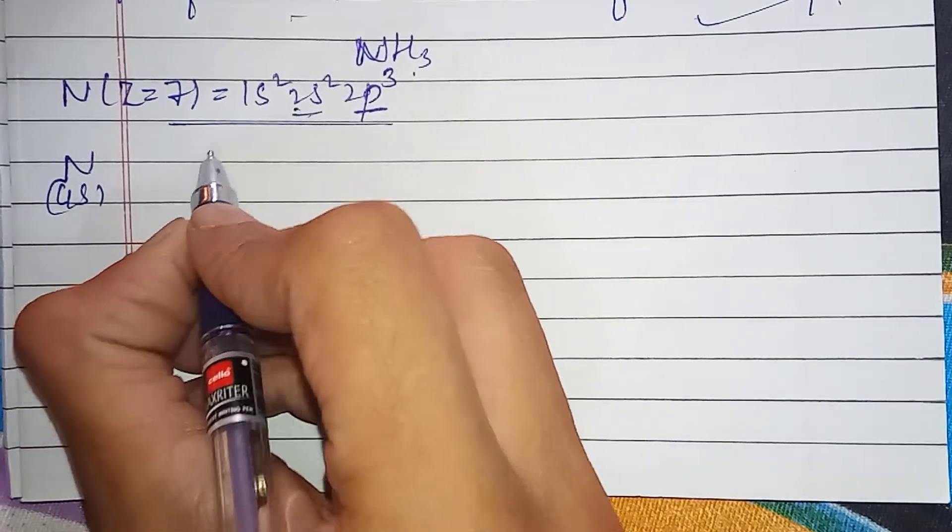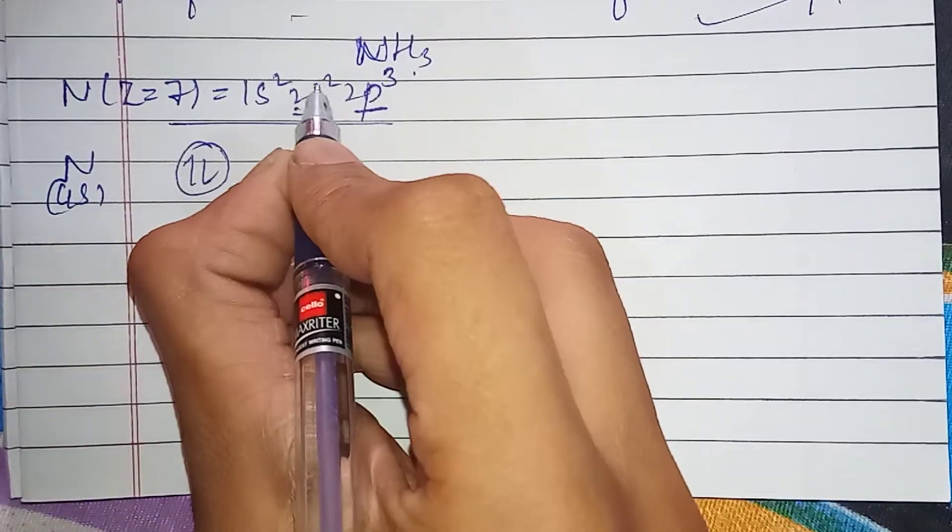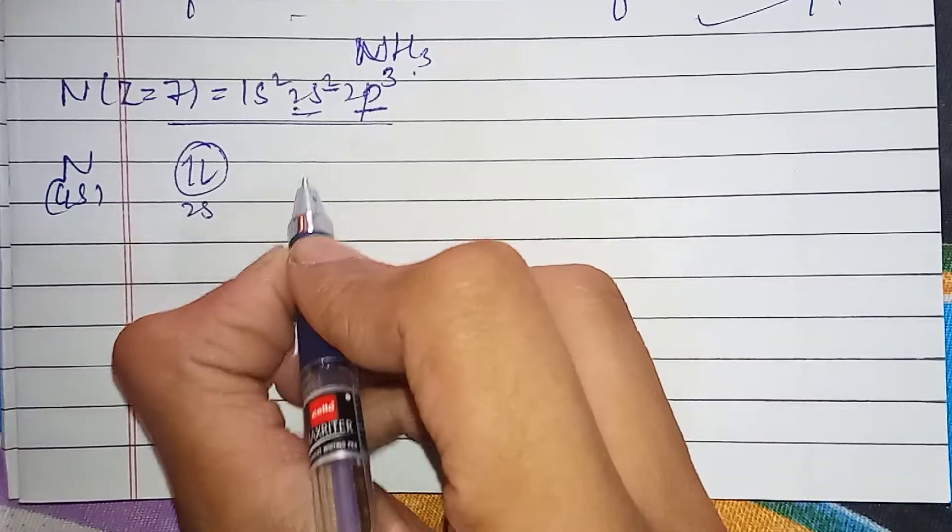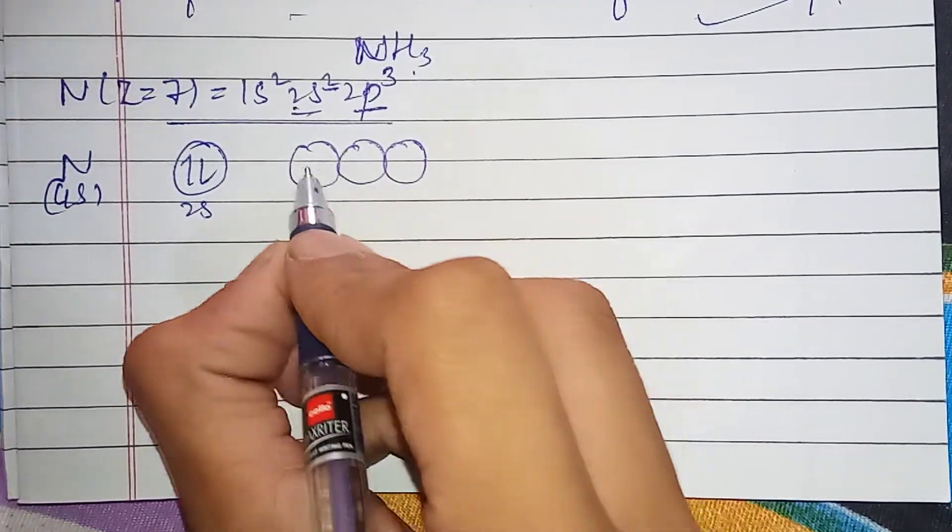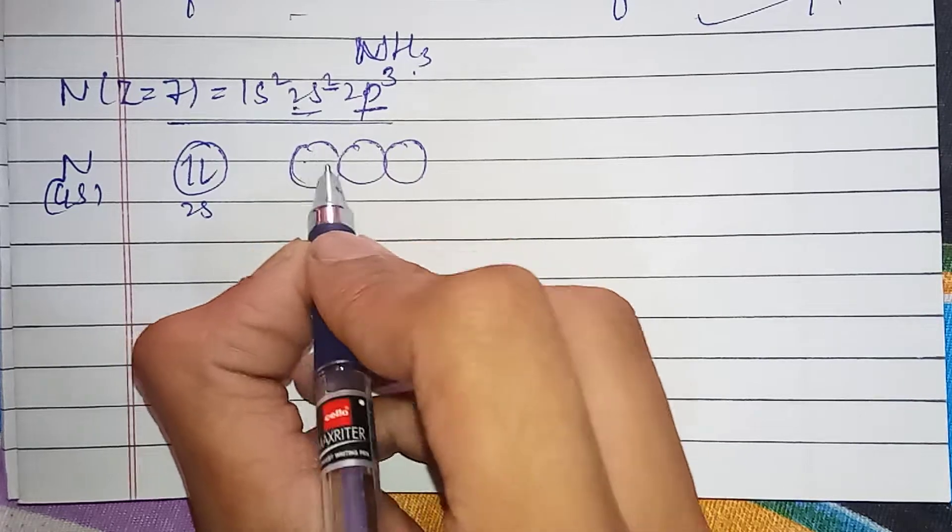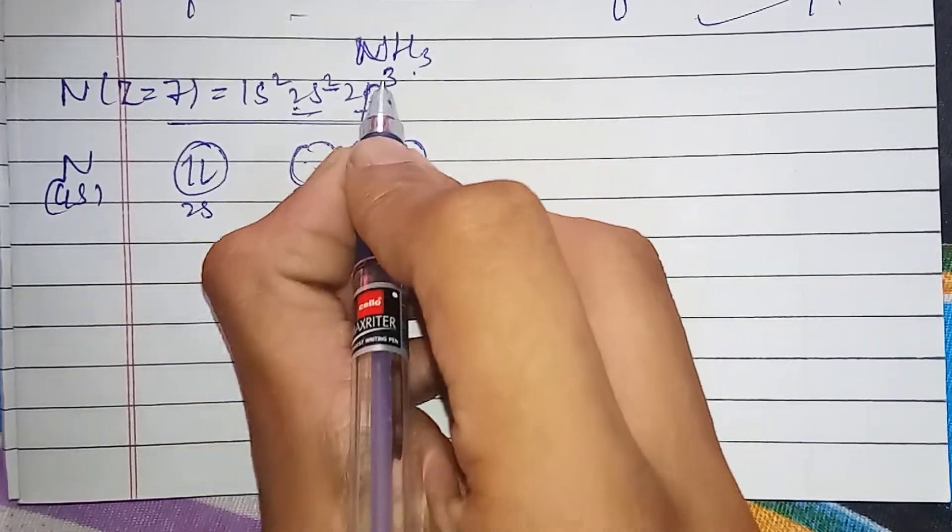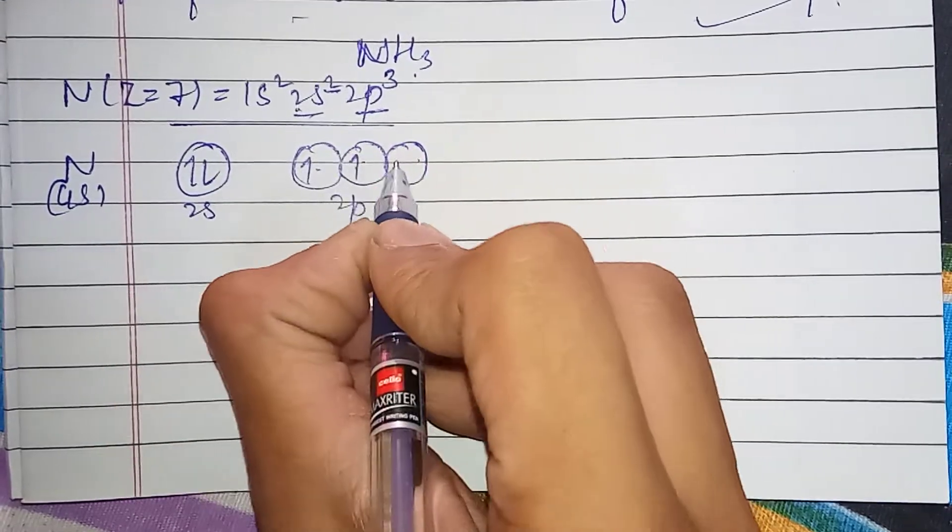In the 2p orbital we have 2s2, then 2p3. Maximum 6 electrons can fill the 2p orbital, but we have 2p3: one, one, one in each orbital.